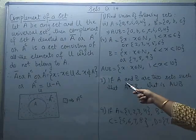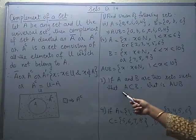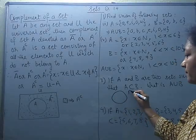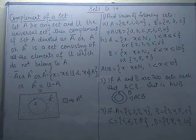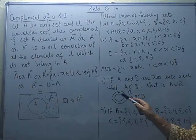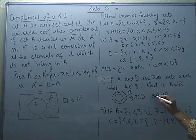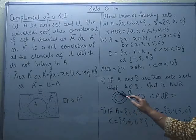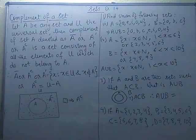The third one says: if A and B are two sets such that A is a subset of B, then what is A union B? Since A is a proper subset of B, I will show through a Venn diagram. Suppose this is B and this is A, showing A is properly contained in B. Now if I take their union — all the elements of A as well as all the elements of B — since B already contains all the elements of A, taking the union will come out to be set B only.